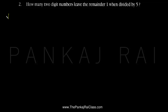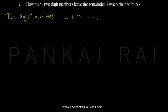So let's do one thing — first make a list of two-digit numbers. The two-digit numbers begin from 10, then 11, 12, 13, and so on, and they will go till 97, 98, 99. So these are all the two-digit numbers.